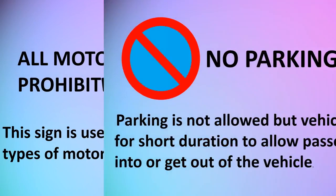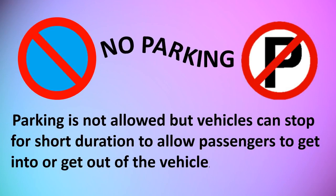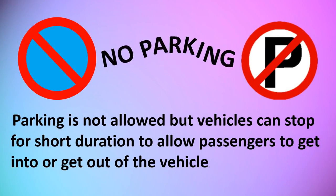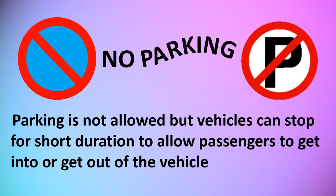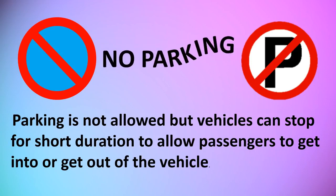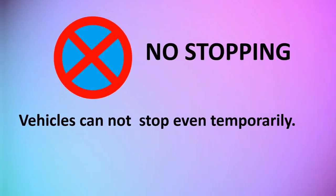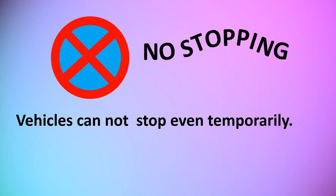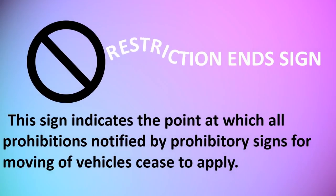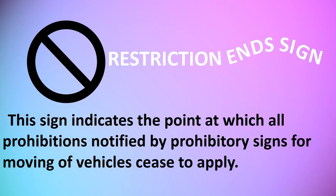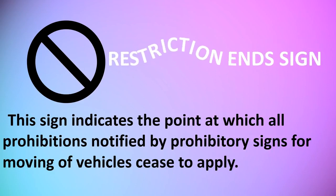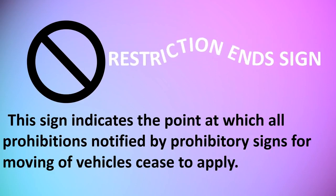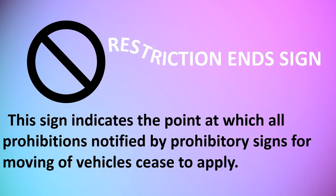All Motor Vehicles Prohibited: this sign is used at places where entry to all types of motor vehicles is prohibited. No Parking: parking is not allowed, but vehicles can stop for short duration to allow passengers to get in or out of the vehicle. No Stopping: vehicles cannot stop even temporarily. Restriction End Sign: this sign indicates the point at which all prohibitions notified by prohibitory signs for moving of vehicles cease to apply.